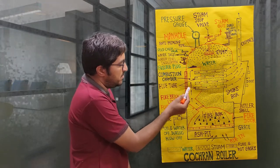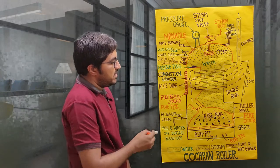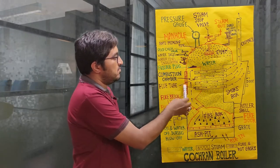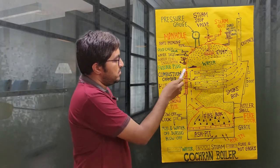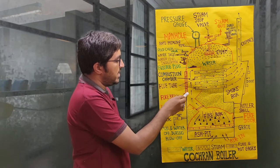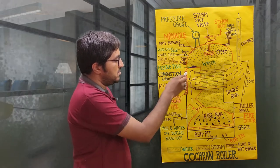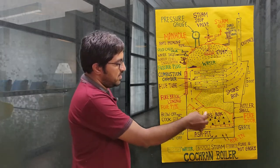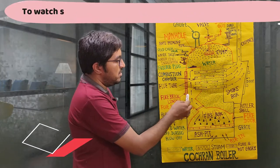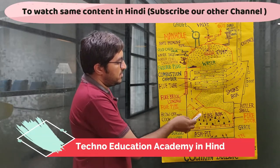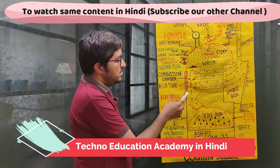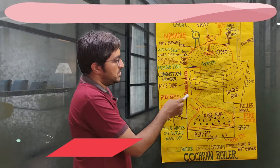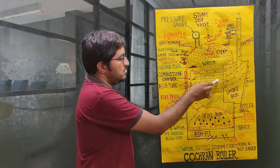The flue pipe connects the firebox with the combustion chamber. One side of the combustion chamber has a fire brick lining material. The function of these fire bricks is to deflect the flue gases coming from the firebox through the flue pipe. After deflection, the hot gases pass through the bundle of tubes.